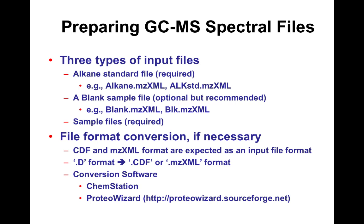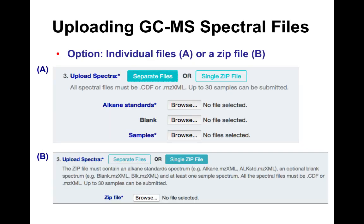These are files to help you run the software in the lab. The alkane standards and blank samples are marked with obvious names; sample files will be provided. You can convert NetCDF to XML using tools like ChemStation or ProteoWizard. It's simple: upload three files — alkane standard, blank, and samples — browse them, and upload. You can also zip them into a single file to save time.